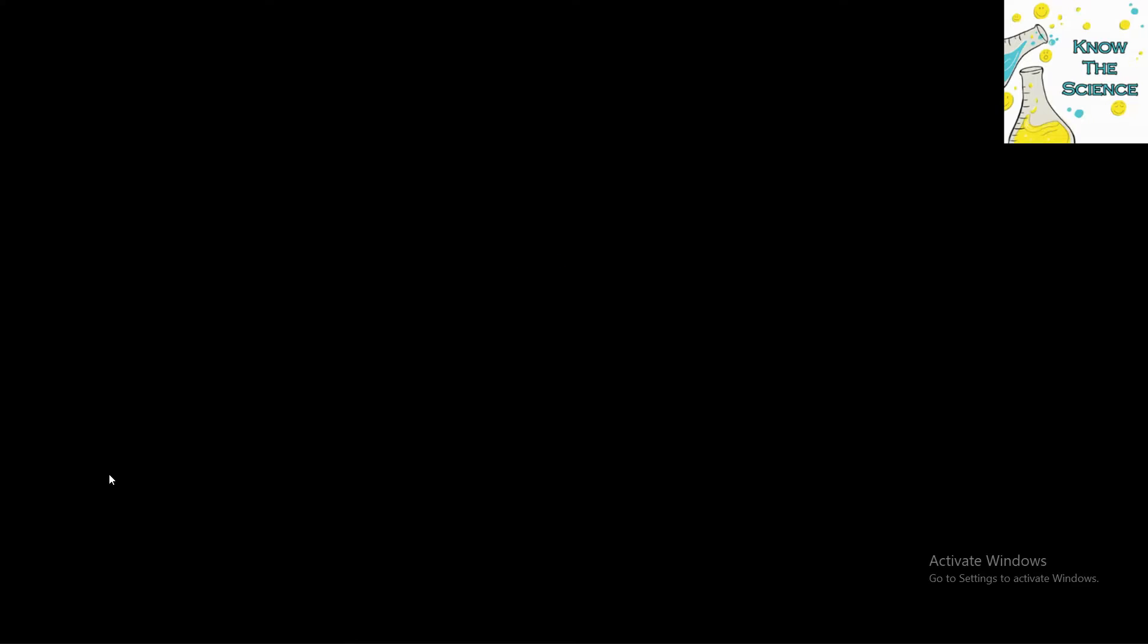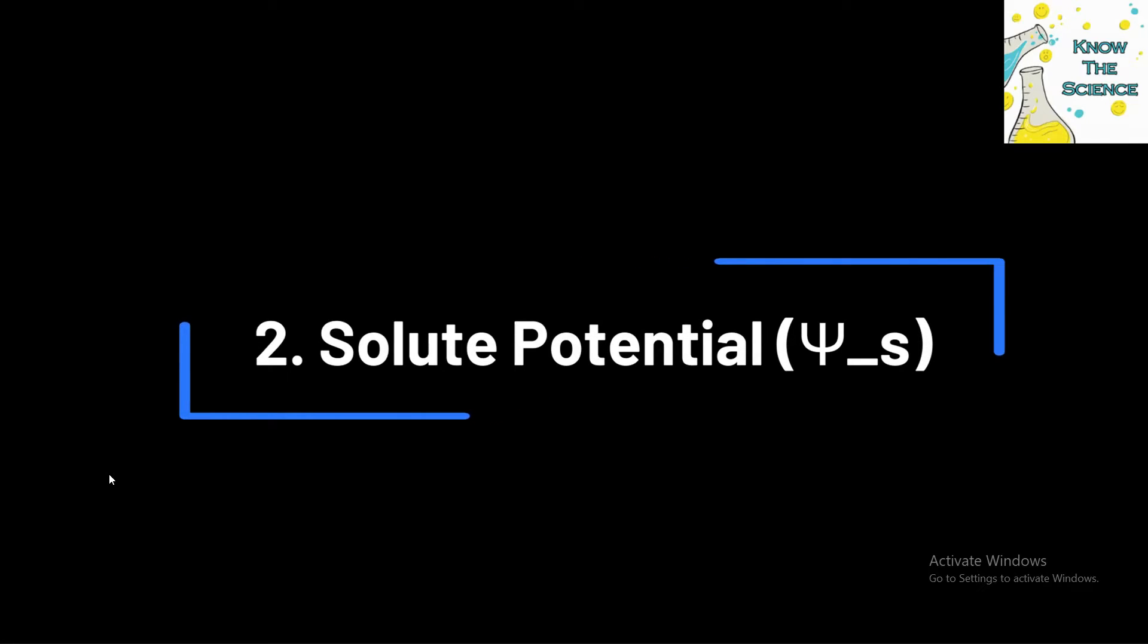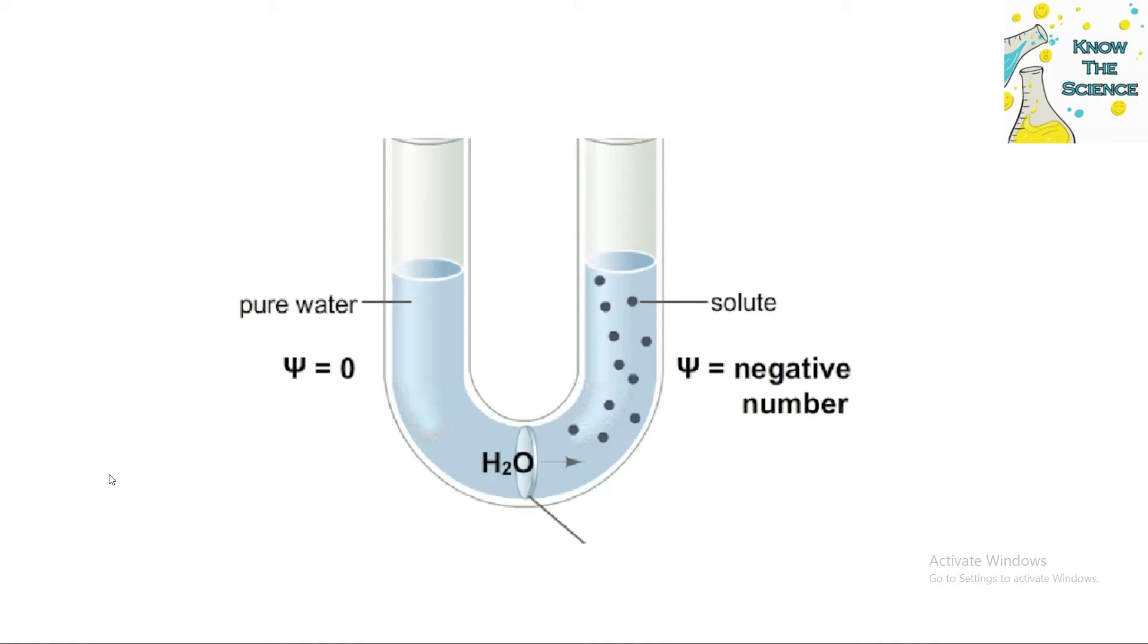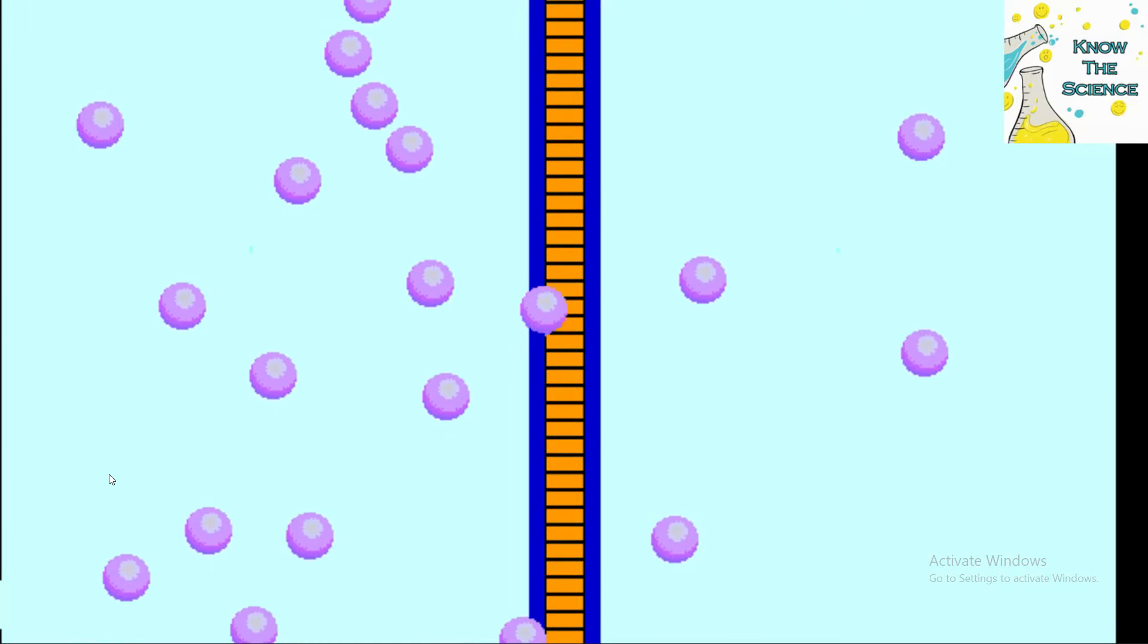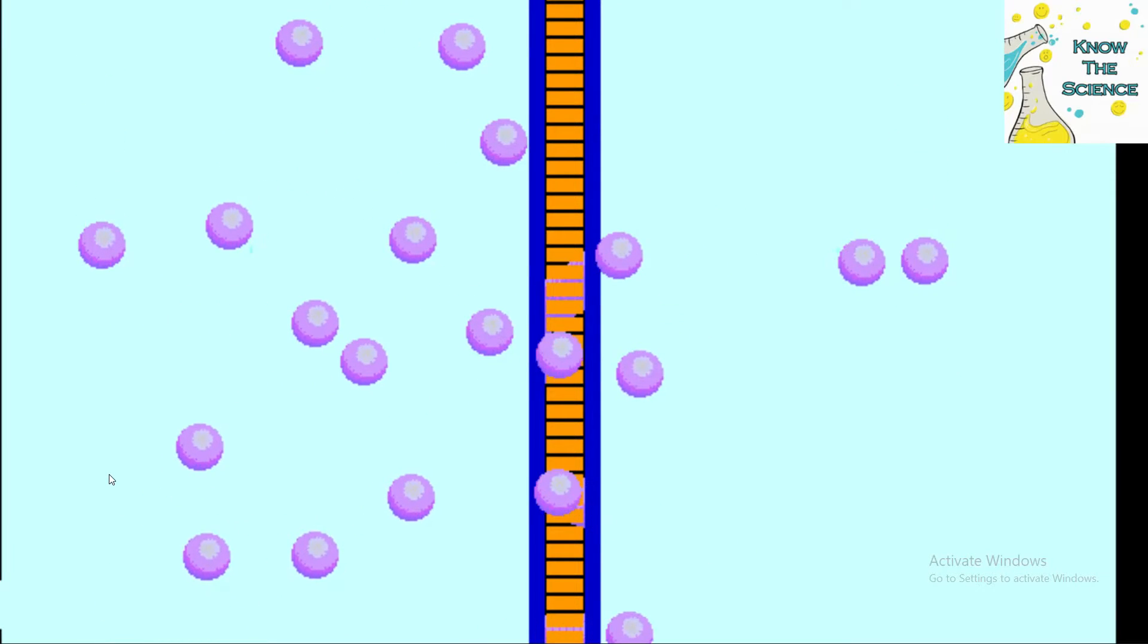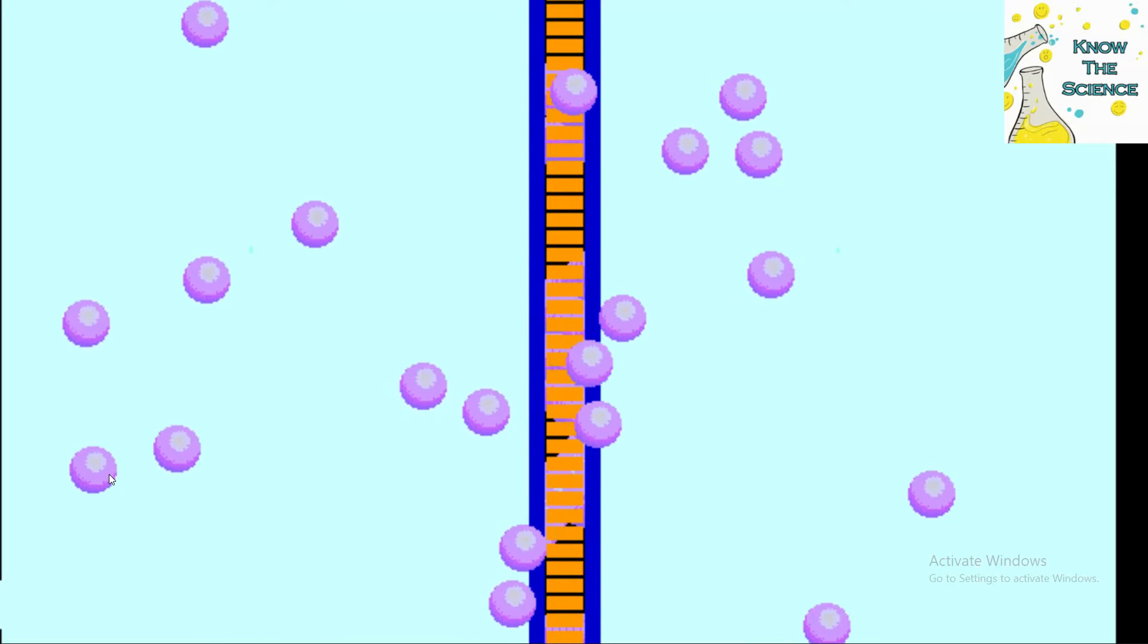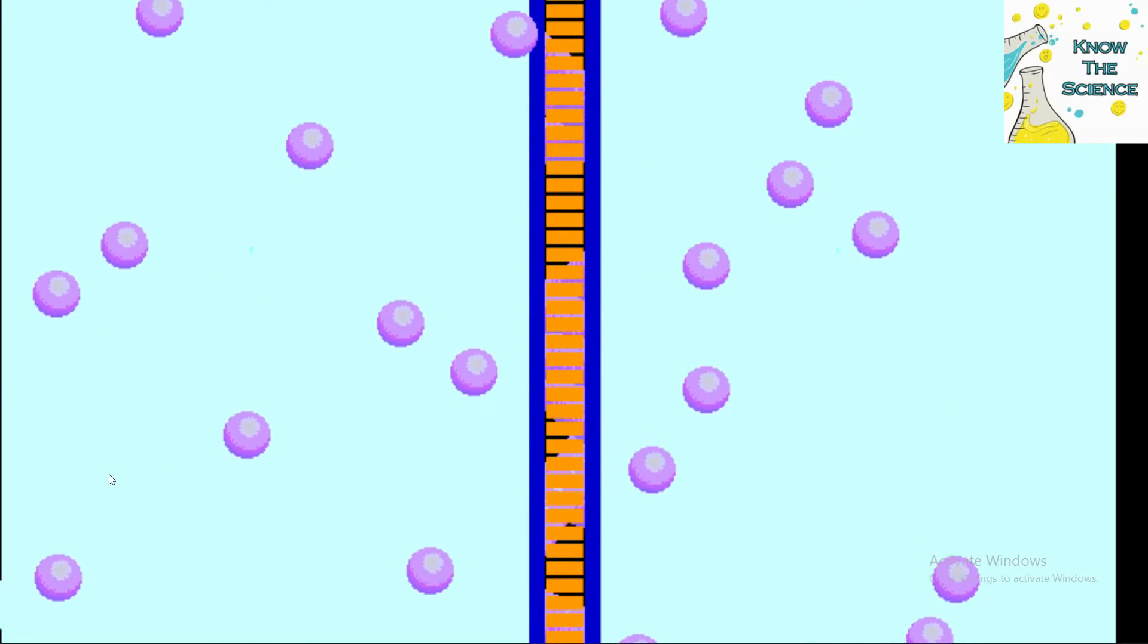Solute potential reflects the effect of solutes dissolved in the water. It's always negative because solutes lower the chemical potential of water. The more solutes present, the more negative the solute potential becomes. For example, highly concentrated solutions have a lower solute potential than dilute ones.